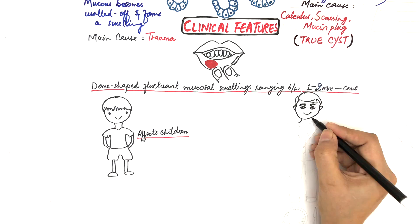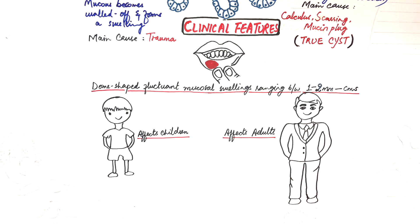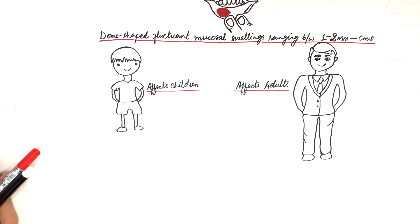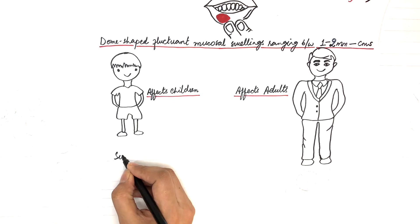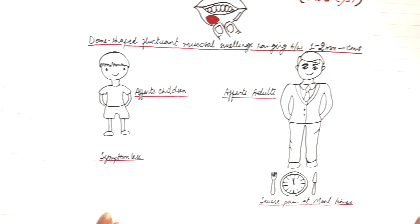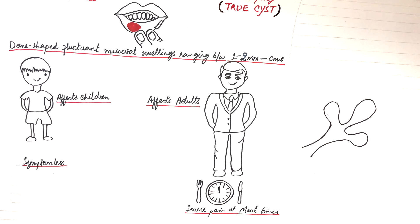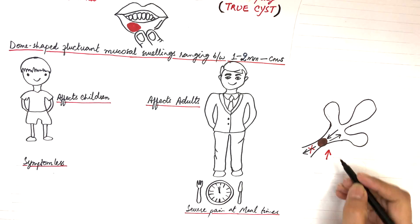However, mucus retention cysts, on the other hand, are more common among adults and affects most often minor and less often major salivary glands. In case of symptoms, the extravasation type is usually symptomless or asymptomatic, but the retention type is accompanied by pain especially during meal times. Because in mealtimes, saliva is stimulated the most. And as saliva cannot move beyond the obstructed zone, this results in high back pressure produced by the saliva causing extreme pain.